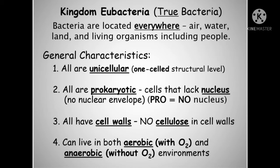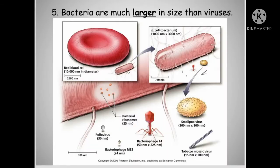All bacteria are unicellular, meaning one cell. All are prokaryotic, meaning they do not have a nucleus. All have a cell wall, but the cell wall does not contain cellulose. Bacteria can live in both aerobic and anaerobic environments — aerobic means with oxygen, and anaerobic means without oxygen.